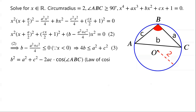By the law of cosines, we know that b squared equals a squared plus c squared minus 2ac times cosine of angle ABC. We are given that angle ABC is greater than or equal to 90 degrees, which means cosine of angle ABC is less than or equal to 0. This implies that a squared plus c squared is less than or equal to b squared.